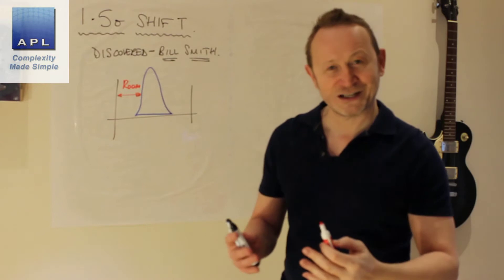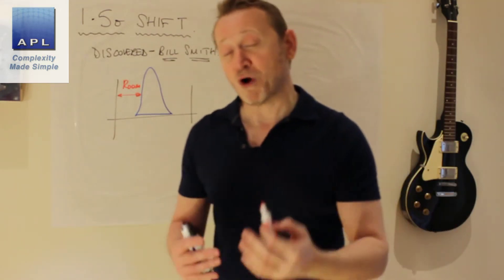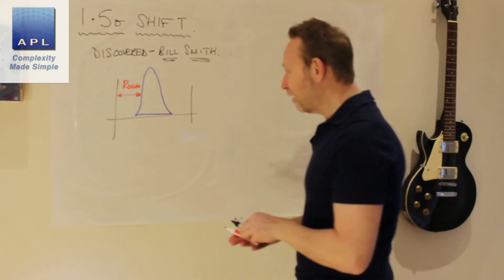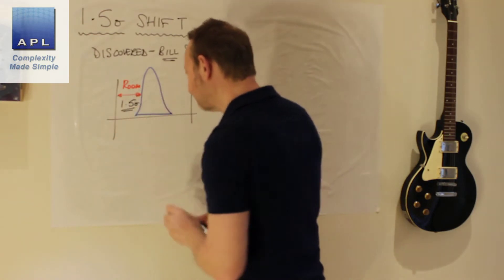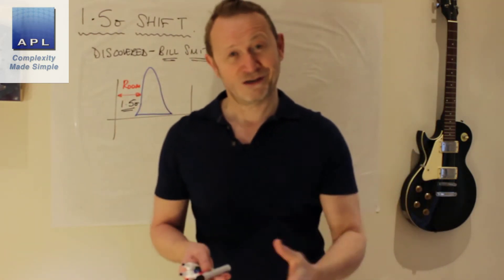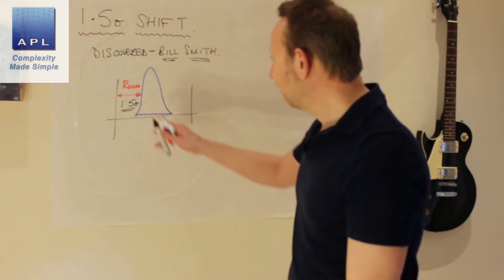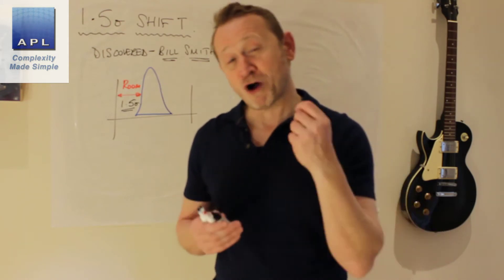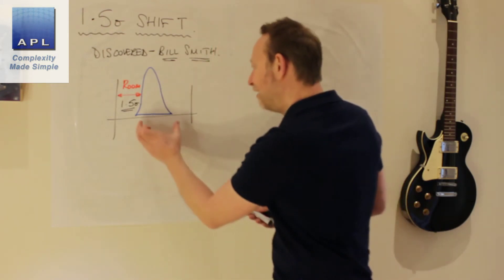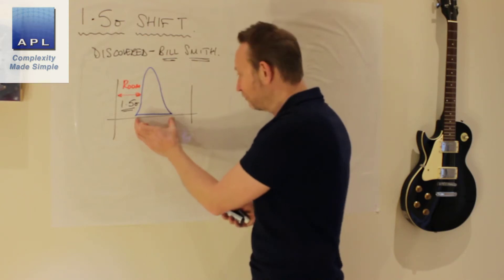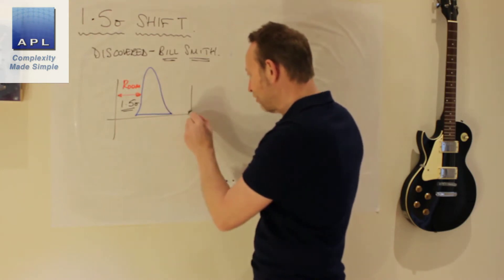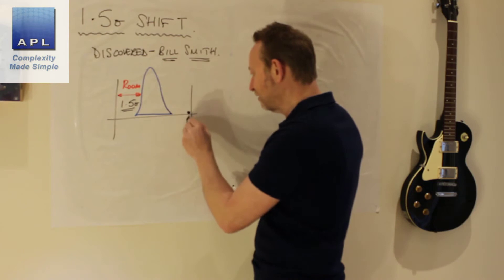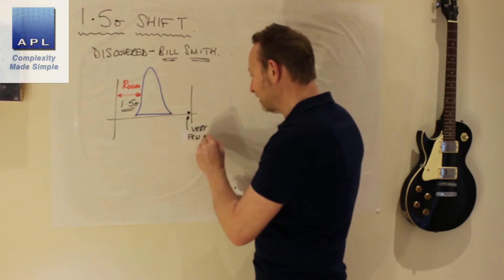We have room for the process to get stressed, for the process to start to wander backwards and forwards. And what Bill Smith said was typically this thing is going to go for a wander up to 1.5 standard deviations, 1.5 Sigma. That's where the 1.5 Sigma shift comes from and why ultimately the target of 6 Sigma. Having a distribution which was half the size of the tolerance, it was to deal with the fact that if this thing wandered towards the tolerance, we'd get results here, but we'd still get very few defects, even shifted.